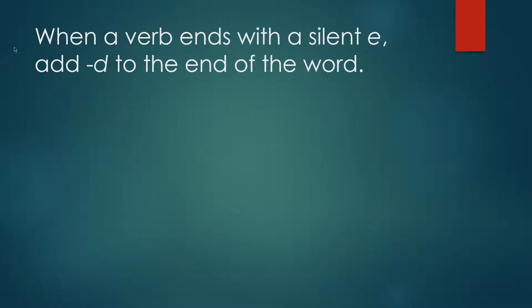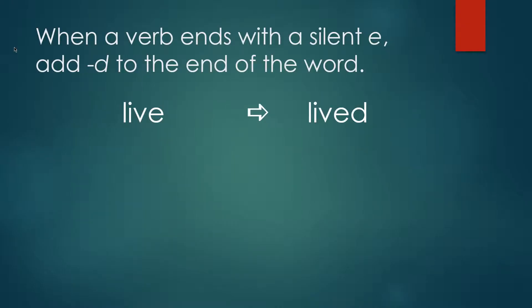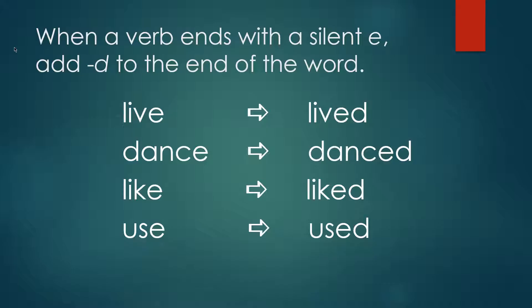When a verb ends with a silent E, add D to the end of the word. For example, live becomes lived, dance becomes danced, like becomes liked, use becomes used.